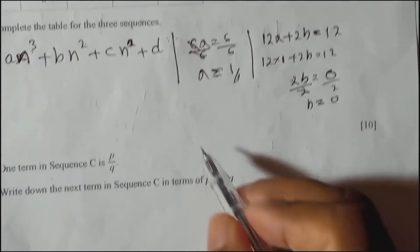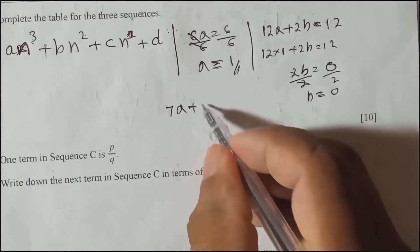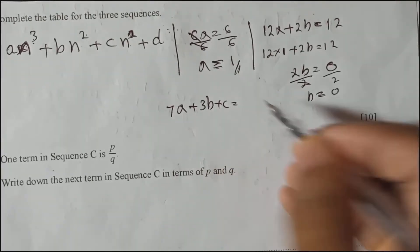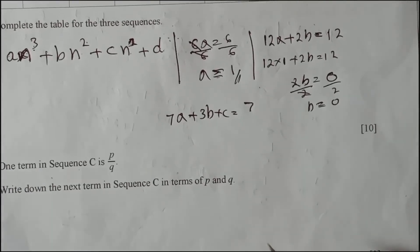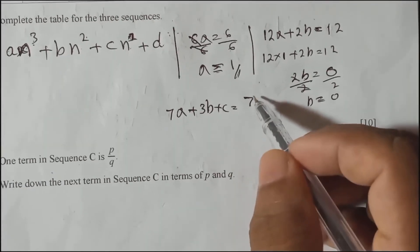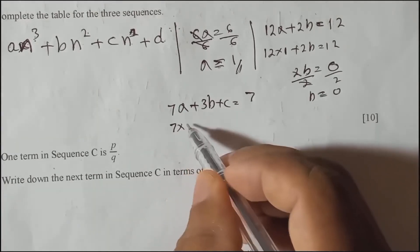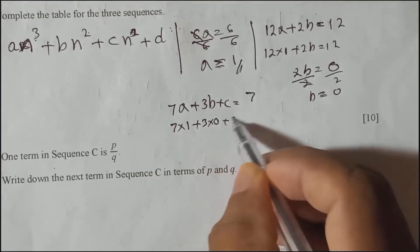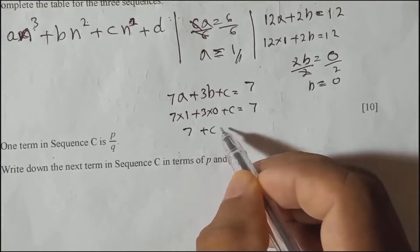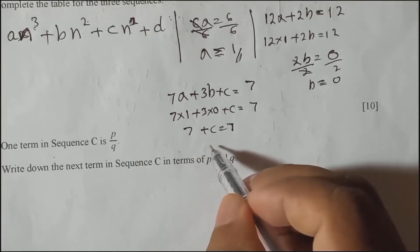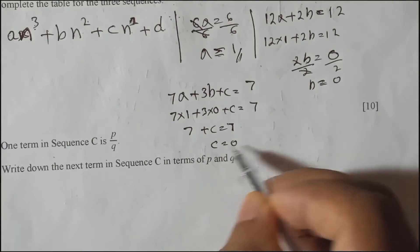Now we find c. Using 7a + 3b + c = 7: substituting a = 1 and b = 0 gives 7(1) + 3(0) + c = 7, so 7 + c = 7, meaning c = 0.